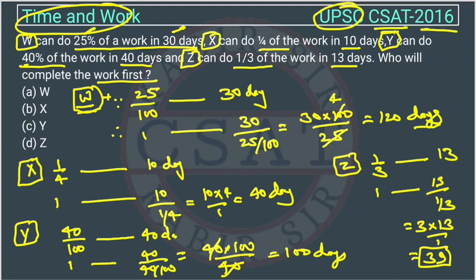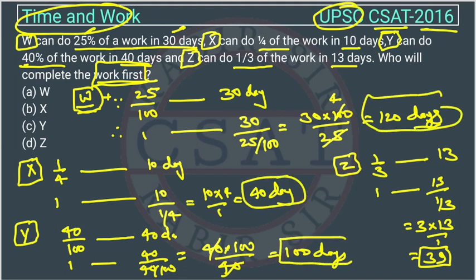Now the question is asking who will complete the work first. Who will complete the work first? Who will take the minimum days? He is taking 120 days, he is taking 40 days, he is taking 100 days, and Z is taking 39 days. So this will be the answer. The answer will be option D, Z.